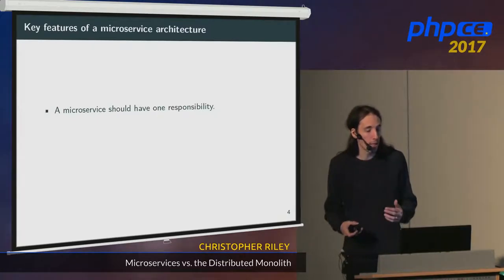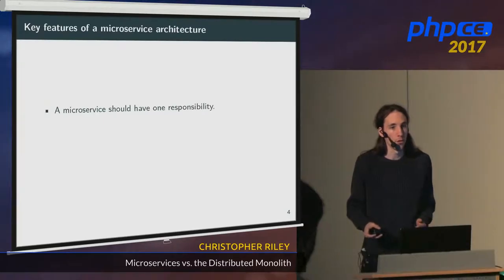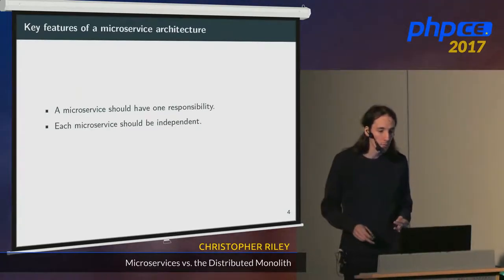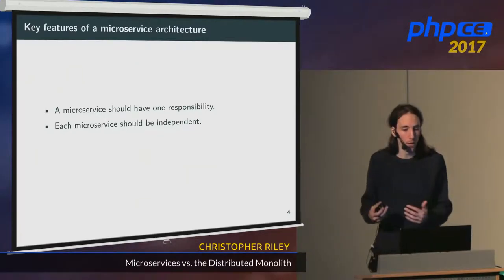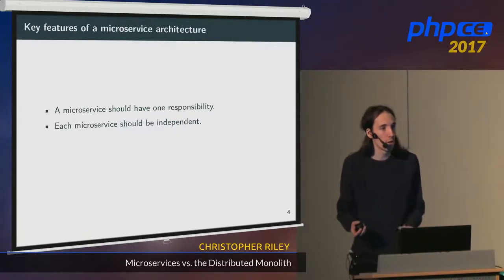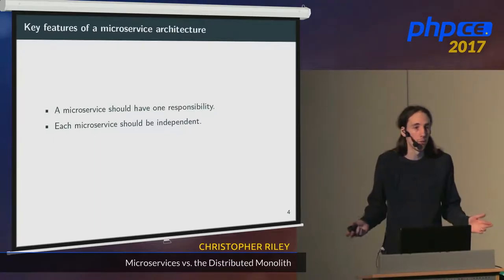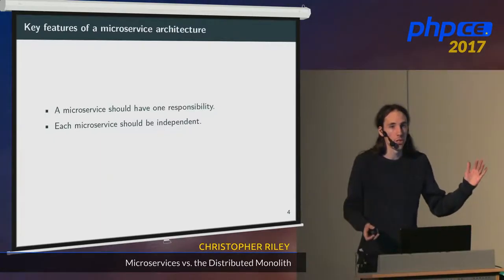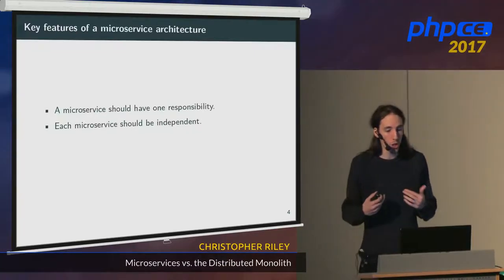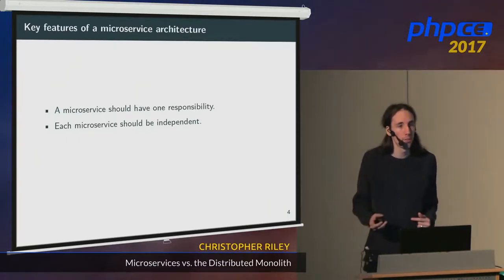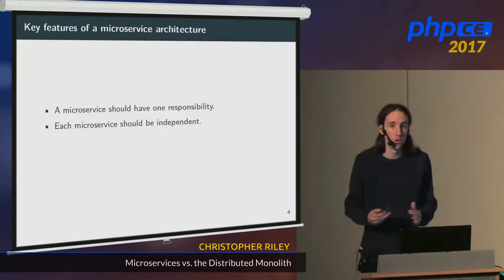One of the key things a microservice should do is have full authority over its area of responsibility. If it's managing users, it shouldn't have to go off to other microservices to find out information about users — it should know everything about users. A microservice should be independent: you should be able to deploy it separately, scale it up separately, and change its inner workings without having to change other microservices. So if you want to completely rewrite a microservice in Go, provided you keep the same external API, you shouldn't have to change any of your other microservices.